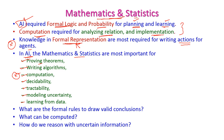By using mathematics and statistics, we can answer the following questions: What are the formal rules to draw a valid conclusion? What can be computed? And how do we reason with uncertain information? These questions are very important to create agent programming, and the math foundation is very important for that.